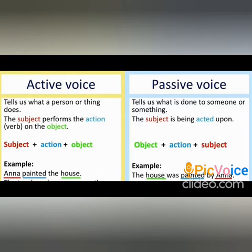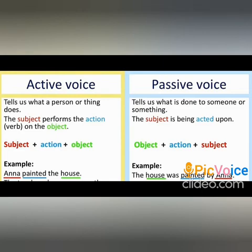Now let us move to passive voice. In the passive voice, it tells us what is done to the subject or something. Here, the subject is being acted upon. In this form of the sentence, first the object will be there, then the action, and then the subject. The same example we discussed for active voice is transformed into passive voice.